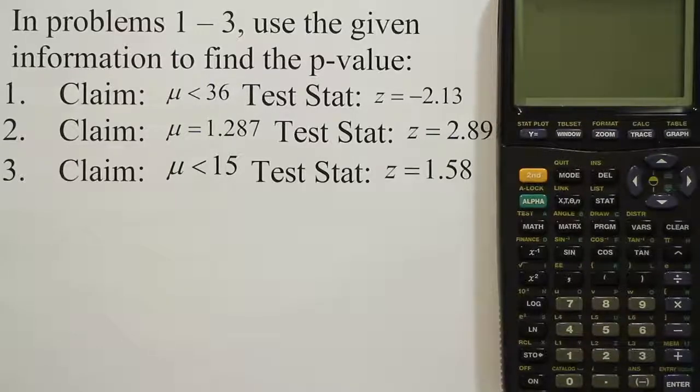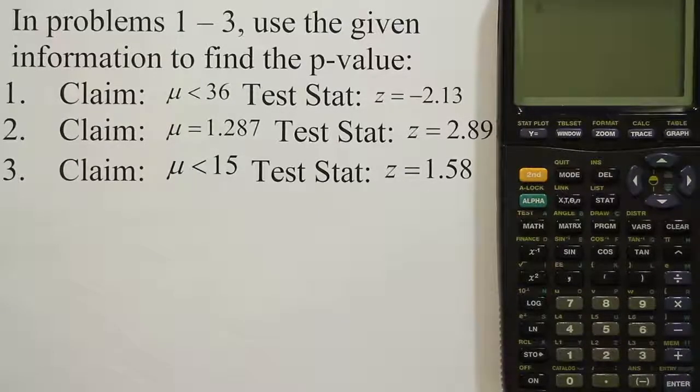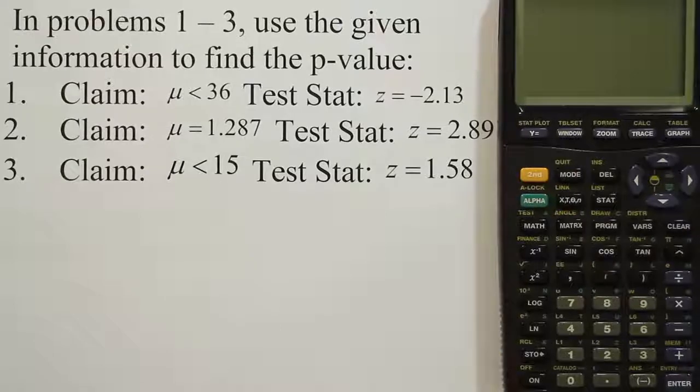And we're going to do a drawing for each of these to help us solve it. So let's start with the first one where the mean is less than 36 and the test stat is negative 2.13.